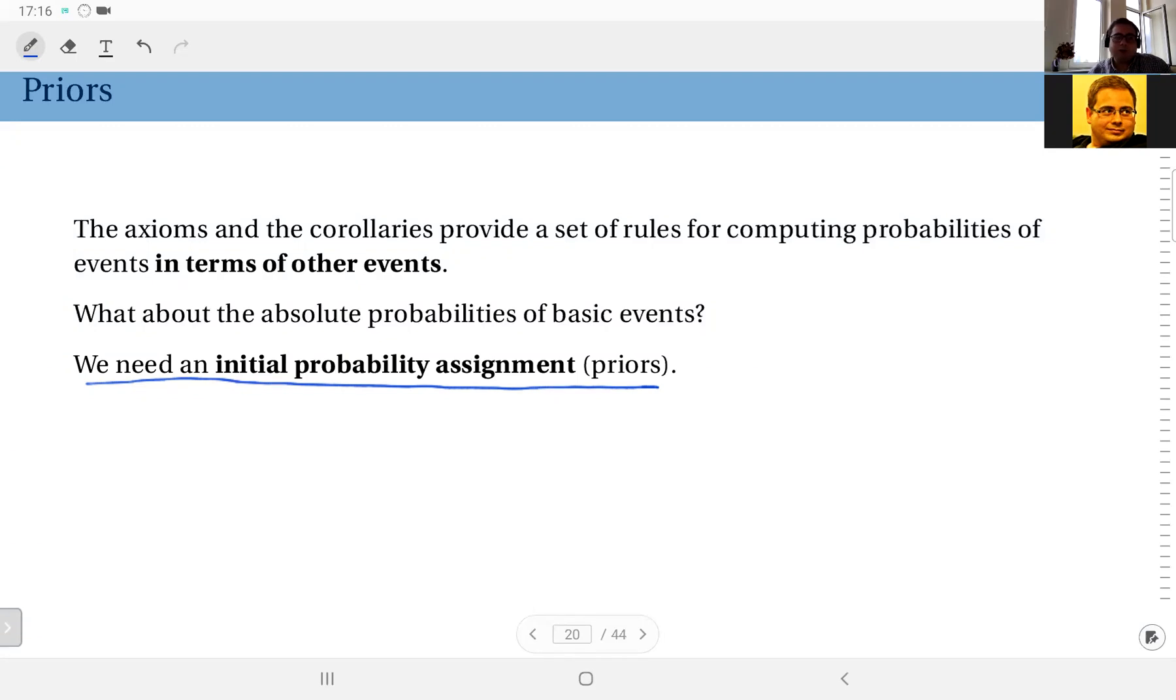So if you do not have anything to the contrary, you will assume that the die is fair, in which case you will assign the probability of 1 over 6 to each of the outcomes. But you see, that is your assumption. At this point, you do not actually know whether it's a fair die or not.